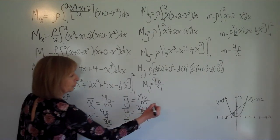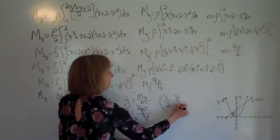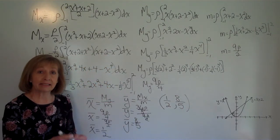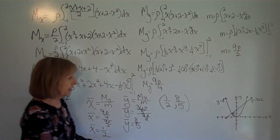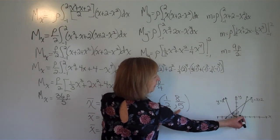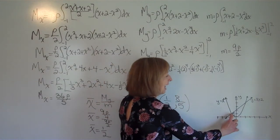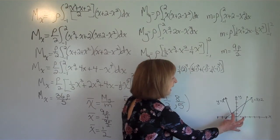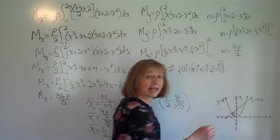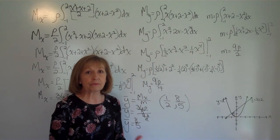So the centroid of this region is the ordered pair (1/2, 8/5). That's the center of mass — right 1/2, up 1 and 3/5 on the graph. If you carefully graphed and cut out this region from cardboard of uniform density, and balanced it on the tip of a pencil at that exact point, the cutout should balance perfectly.